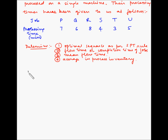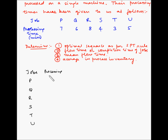Let us set up the table. Jobs: P, Q, R, S, T, and U. Their processing times in minutes are: P is 7, Q is 6, R is 8, S is 4, T is 3, and U is 5.